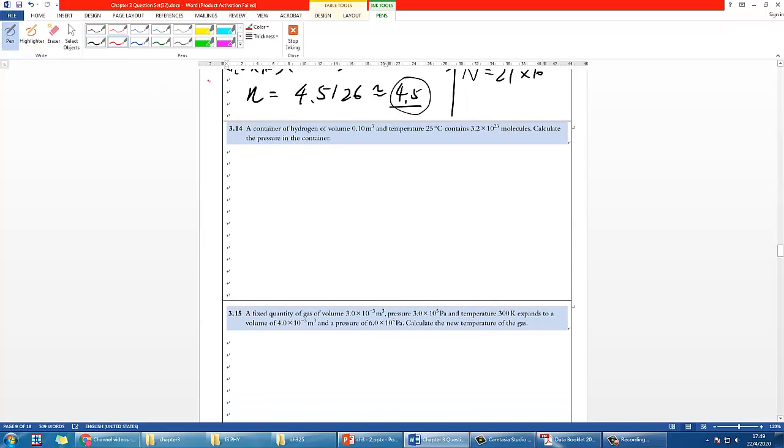Let's take a look at the next question. It has the volume and temperature. Be careful, it is in degrees Celsius, so you have to change it to Kelvin. This is the big N, and it actually asks you to calculate the pressure.